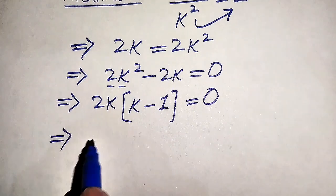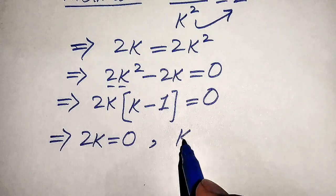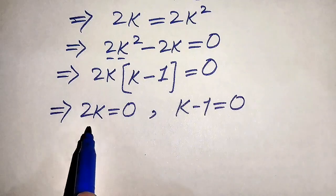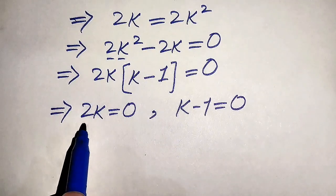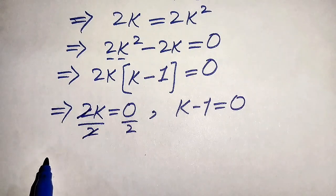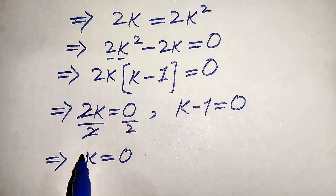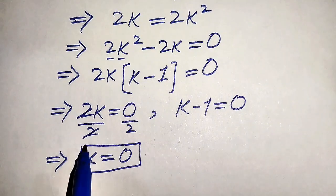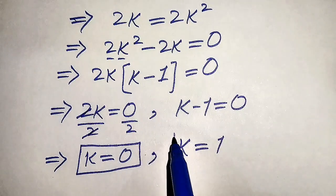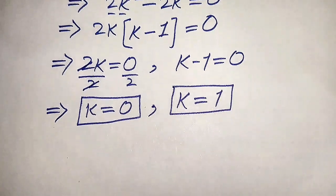We split into two cases: the first case is 2k equals 0, and the second case is k minus 1 equals 0. For the first case, dividing both sides by 2 gives k equals 0. For the second case, moving minus 1 to the right hand side gives k equals 1.